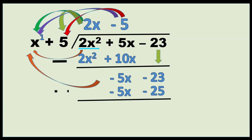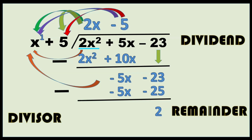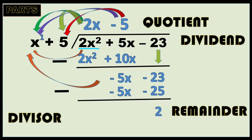The next step is to subtract: negative 5x minus negative 5x is 0. Then negative 23 minus negative 25 — again, we change the sign of the subtrahend, changing negative into positive. So if we have negative 23 plus positive 25, the answer is positive 2. So we have the divisor x plus 5, the dividend 2x squared plus 5x minus 23, the remainder 2, and the quotient 2x minus 5.